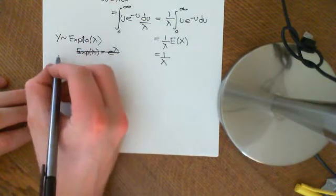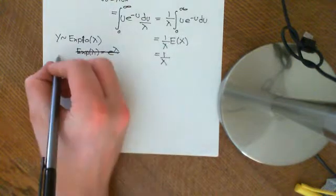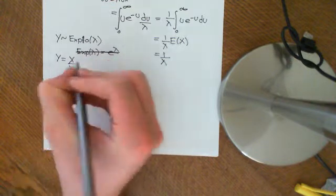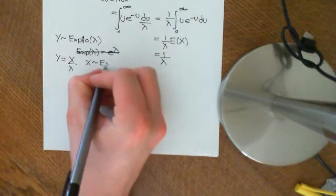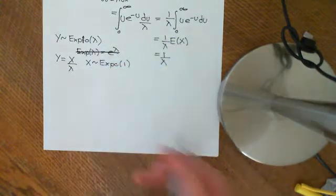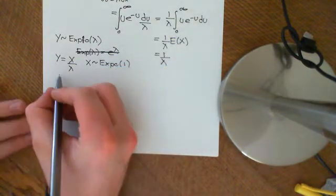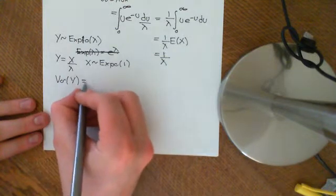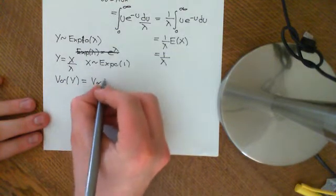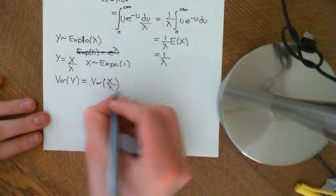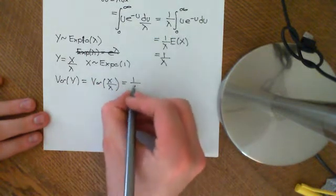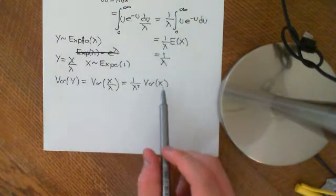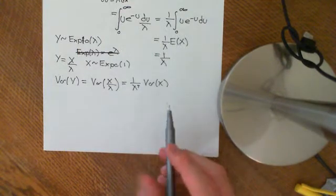Because if y is exponentially distributed with parameter lambda — a general exponential distribution — then y is actually equal to x divided by lambda, where x is a random variable exponentially distributed with parameter 1, i.e. the standard exponential distribution. We can then apply properties of variance: Var(y) equals Var(x/λ), and pulling out lambda gives us 1 over lambda squared times Var(x). So all we need is the variance of the standard exponential distribution.